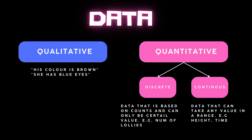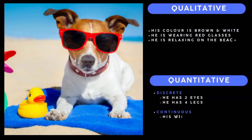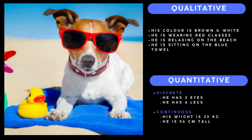So that's qualitative and quantitative data. Let's take a look at this picture, which is a beautiful picture of a dog on a beach. The qualitative data from this picture is that the color of the dog is brown and white, he's wearing red glasses, he's relaxing on a beach, and he's sitting on a blue mat. For quantitative discrete data, he has two eyes and four legs. For continuous data, his weight is 25 kg and his height is 50 centimeters.